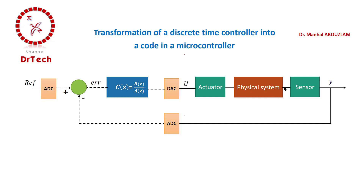The sensor measures a physical quantity and gives this measurement as an analog signal. Since the controller is in discrete time, the inputs to the controller must be digital signals. Because both the sensor output and the reference signal are analog, we have placed analog-to-digital converters (ADC) here to convert these analog signals into digital signals.